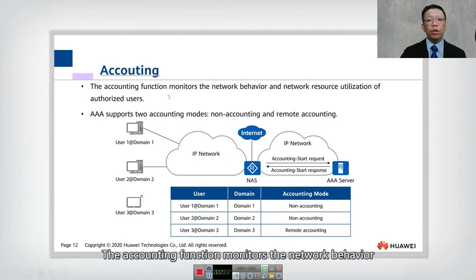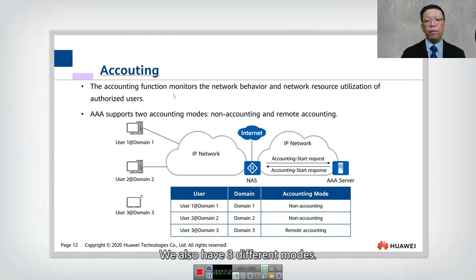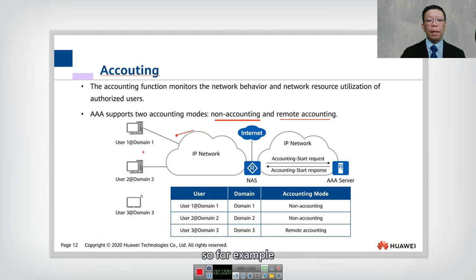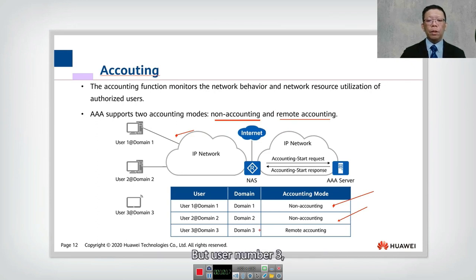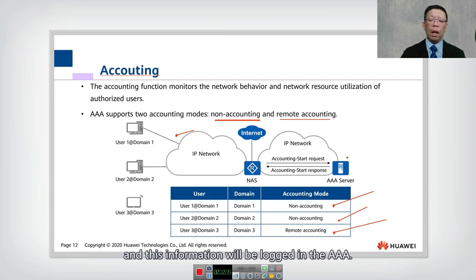The accounting function monitors network behavior and resource utilization of authorized users. Unlike authentication and authorization which have three modes, accounting only has two modes: non-accounting and remote accounting — there is no local accounting. For user one and user two using non-accounting, activity is not logged. For user three using remote accounting, when the user accesses the network and authentication and authorization are permitted, the activity is recorded in the AAA server, which can be HW TACACS or RADIUS.